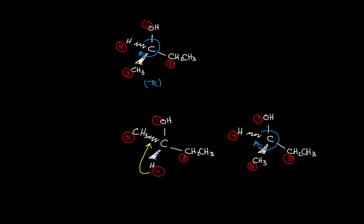That would indicate R. However, because we did a rotation on the molecule to send the lowest priority group to the back, we flip the R to be S. So this is now an S molecule. In reality this is S, because we have flipped or rotated the molecule to take the lowest priority group to the back.